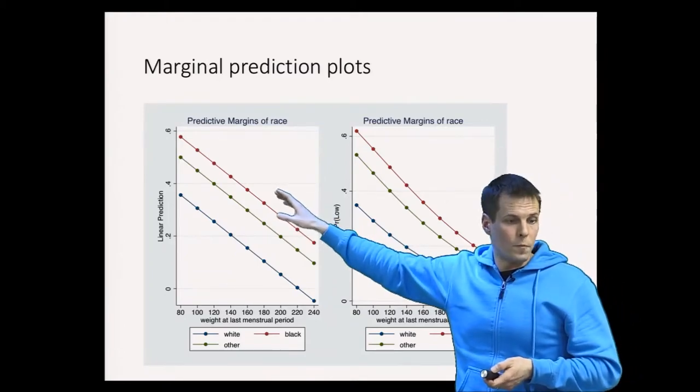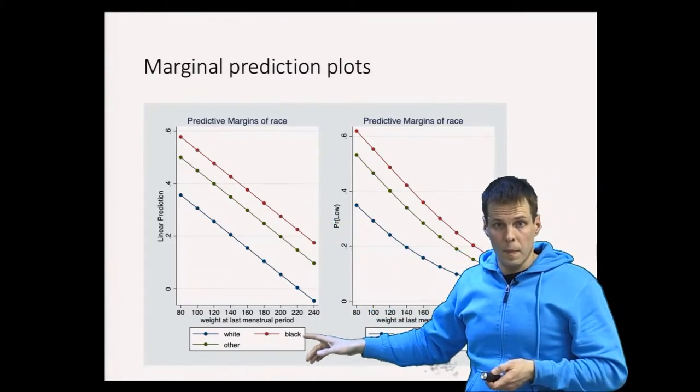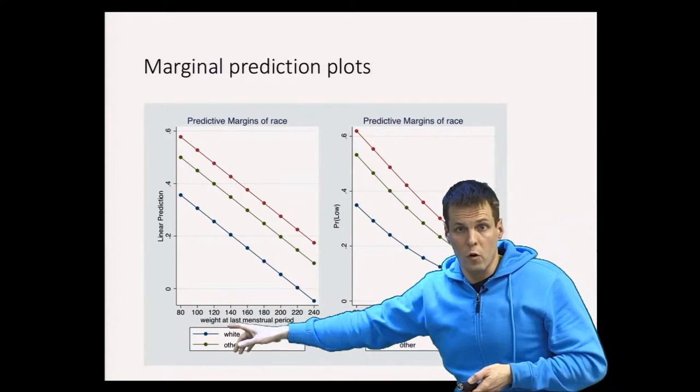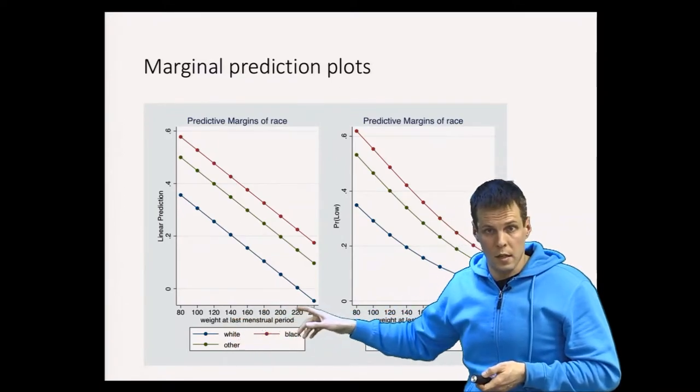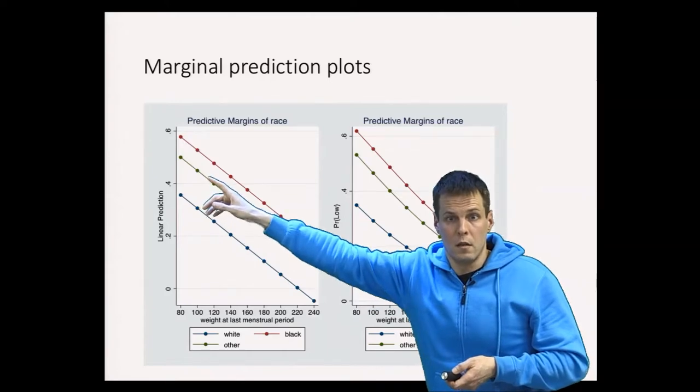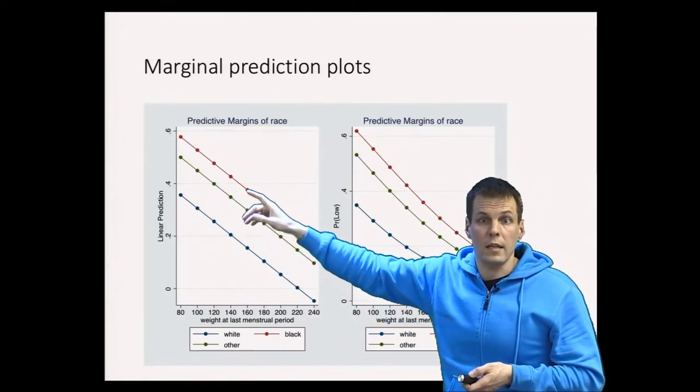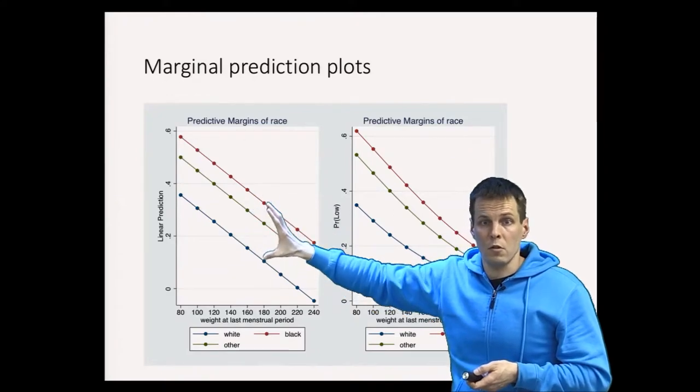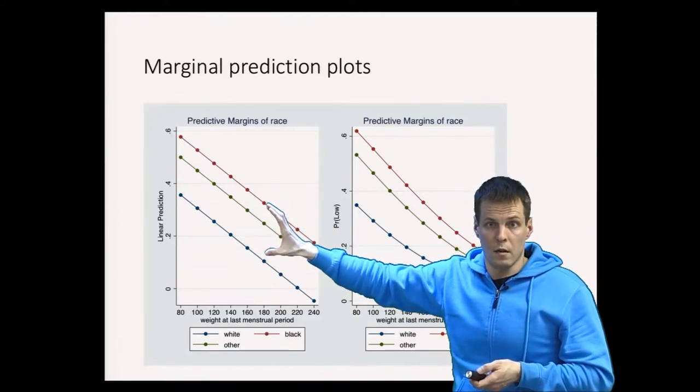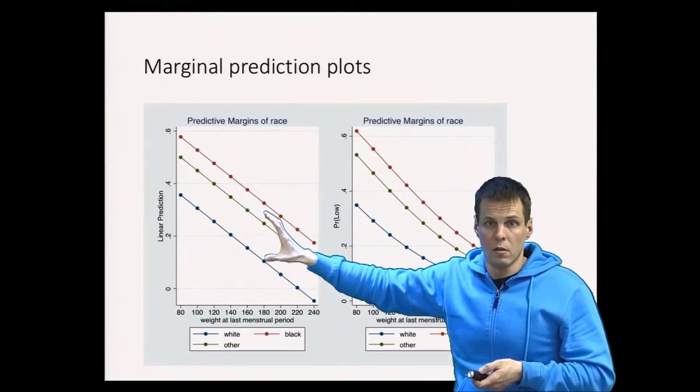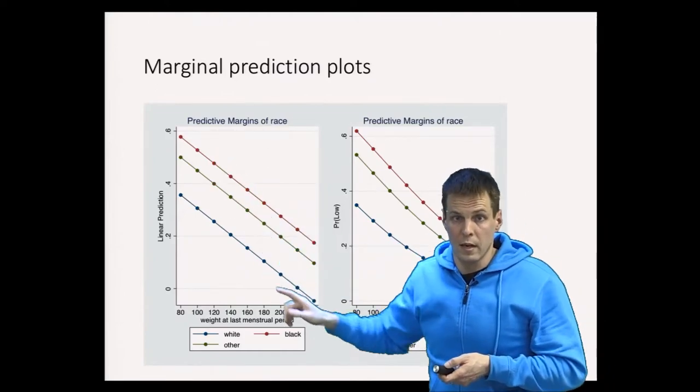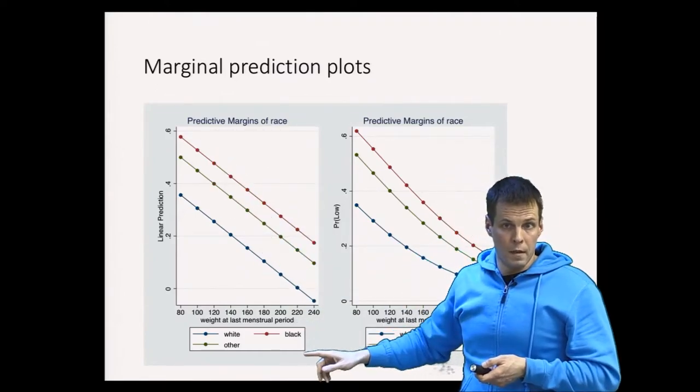This is from STATA, so this is the linear predictions. We can see from the linear model that the effect of birth weight here is the same for all kinds of mothers. So we have three races here and the effect of weight at the last menstruation is the same for all mothers. The mothers only differ with respect to the base level, the intercept, because we estimated the effect of race.